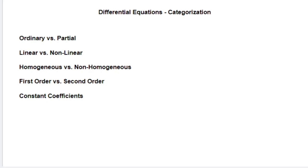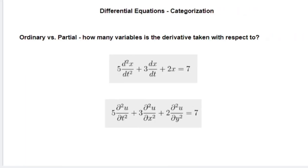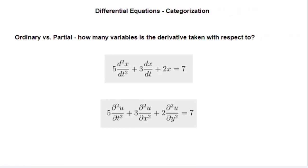So we'll be looking at the categorizations that you can see here. First up, ordinary versus partial differential equations. The question we really need to ask ourselves is how many variables is the derivative taken with respect to? If we look at our first equation here, we can see that everything is taken with respect to t. So x is a dependent variable on t, t is the independent variable. Everything's taken with respect to one variable. This is an ordinary differential equation, an ODE.